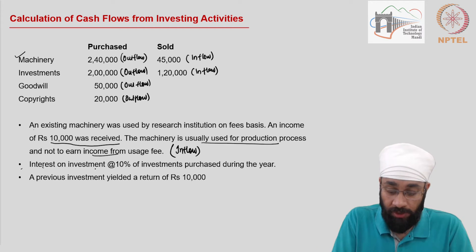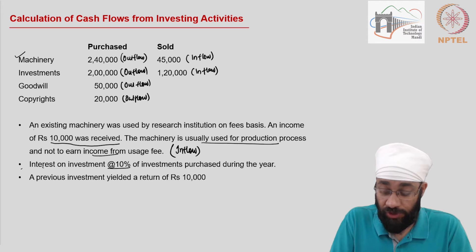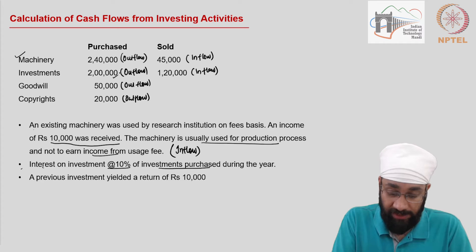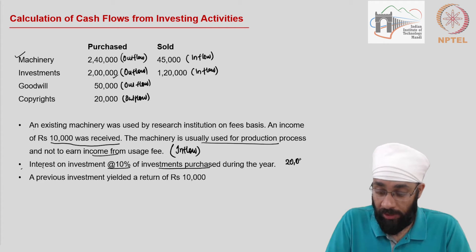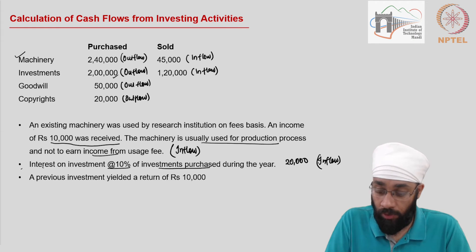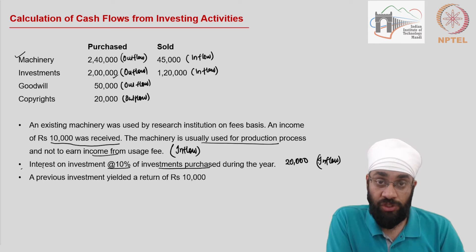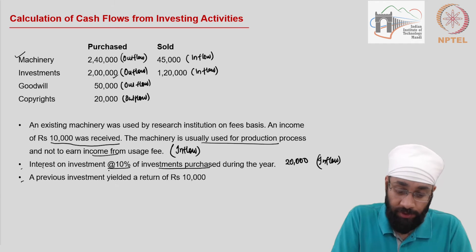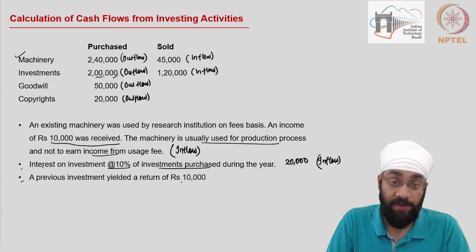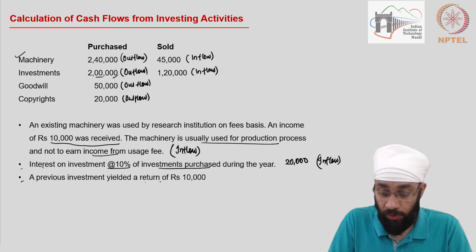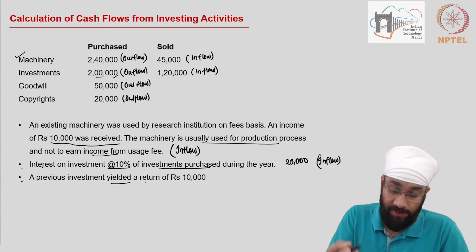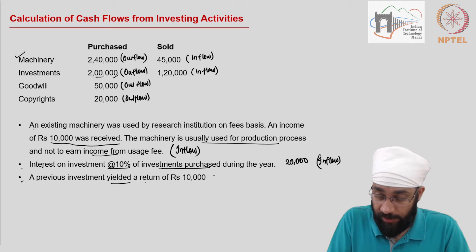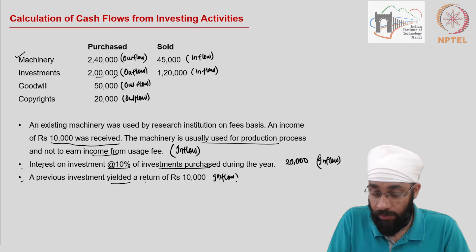The next point is interest on investment at the rate of 10% of investments purchased during the year. The investments purchased during the year are 2 lakhs, and 10% of that is going to be 20,000. This is an inflow — income on the financial investments made during the year. A previous investment, not the ones purchased but the ones the company already had, also yielded a return. This is also an inflow which needs to be shown.